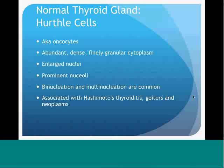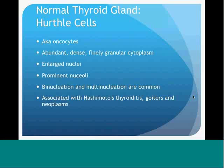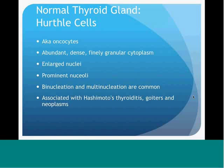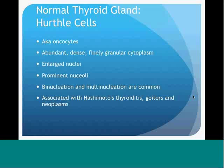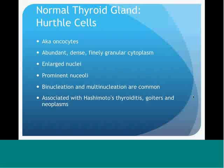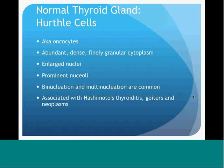You can also see Hürthle cells—also known as oncocytes—in the normal thyroid gland. They have finely granular, abundant cytoplasm. Sometimes the nuclei are a little large and may have nucleoli. You can see binucleated and multinucleated forms. They are most commonly associated with Hashimoto's thyroiditis but can also appear as metaplastic cells in nodular goiter, as well as in Hürthle cell neoplasms, which are Category 3 or Category 4.